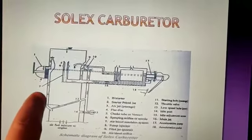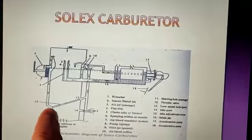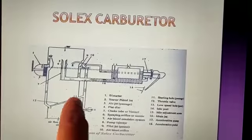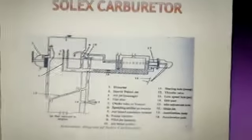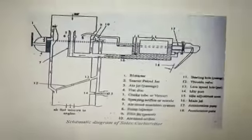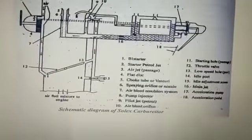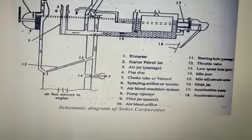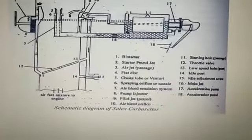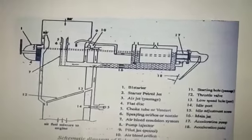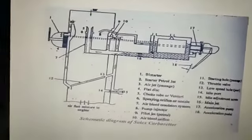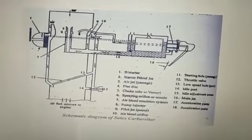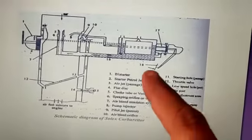The second is the starting circuit. Here you have a passage for the starting circuit. Item number 12 is the throttle valve. The third circuit is the idling circuit.